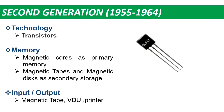Next are 2nd generation computers, from 1955 to 1964. They used transistors, which were very small compared to large vacuum tubes. In comparison to vacuum tubes, they used very little electricity and were very fast. For primary memory, magnetic cores were used, and for secondary memory, there were magnetic tape and magnetic disks.